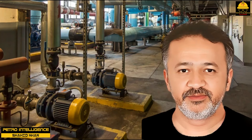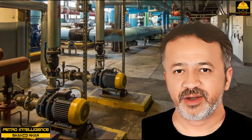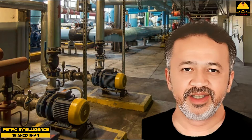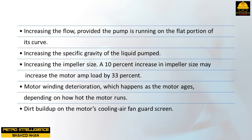Factors that increase the amp load on a pump's motor driver are: increasing the flow, provided the pump is running on the flat portion of its curve; increasing the specific gravity of the liquid pumped; increasing the impeller size — a 10% increase in impeller size may increase the motor amp load by 33%; and motor winding deterioration, which happens as the motor ages depending on how hot the motor runs.